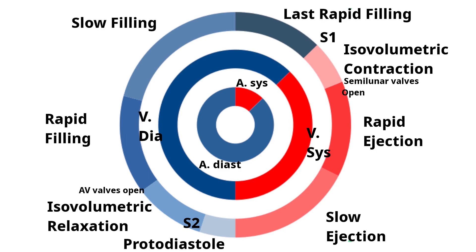After ventricular systole has ended, the pressure in the ventricles decreases below that of the aorta and pulmonary arteries, so the aortic and pulmonary valves close and the second heart sound, S2, is produced. There is a slight delay between the end of ventricular systole and closure of these valves due to the inertia of blood ejecting out, and this period is known as protodiastole. At the end of protodiastole, S2 is produced. The ventricles then start to relax, but the pressure is not yet low enough for the mitral and tricuspid valves to open, so with all four valves closed and volume constant, this is known as isovolumetric relaxation.